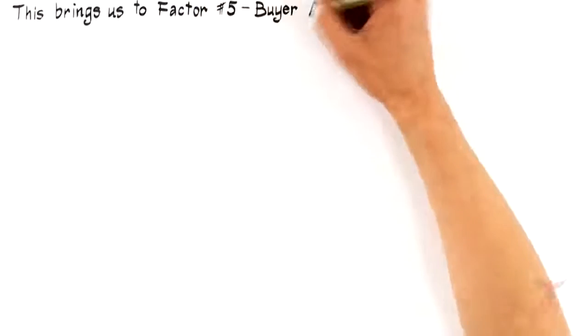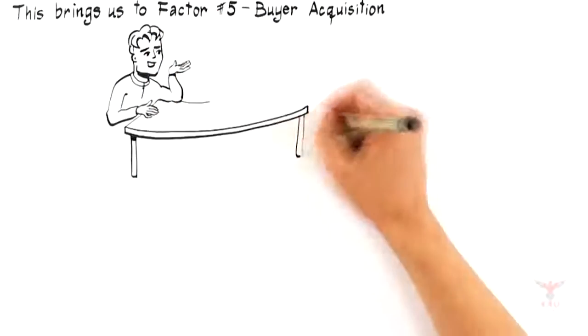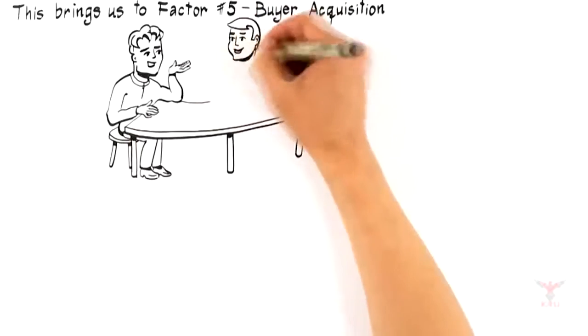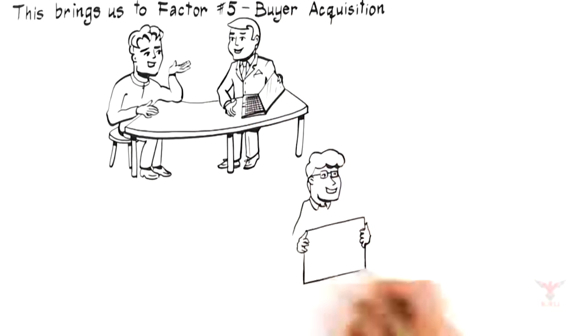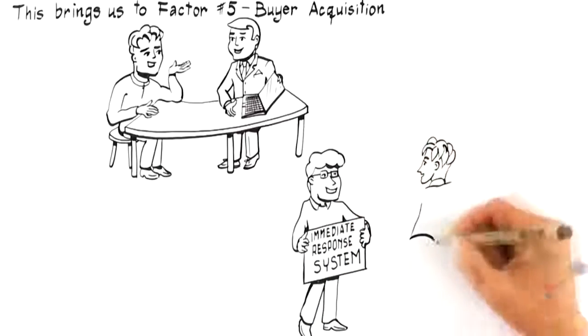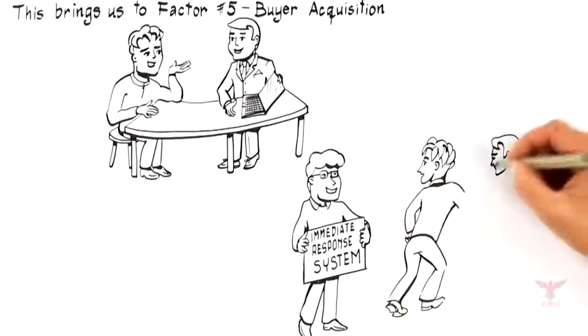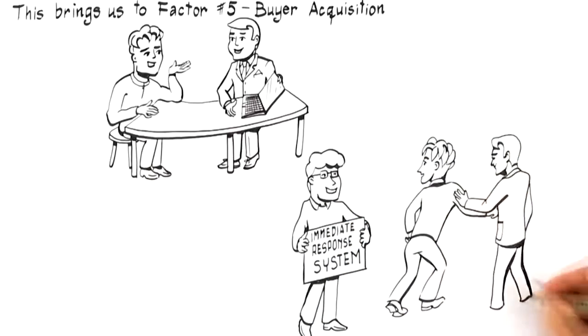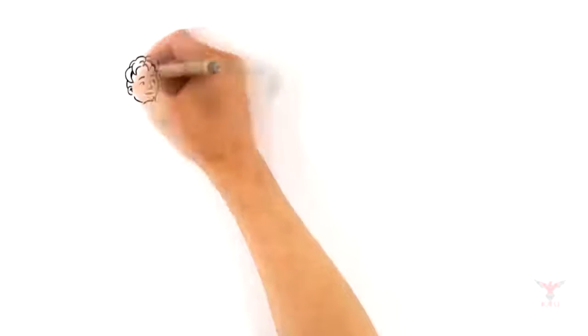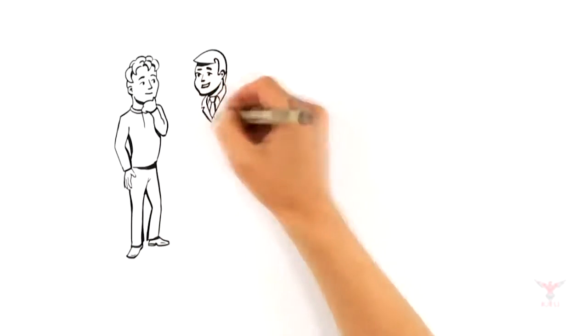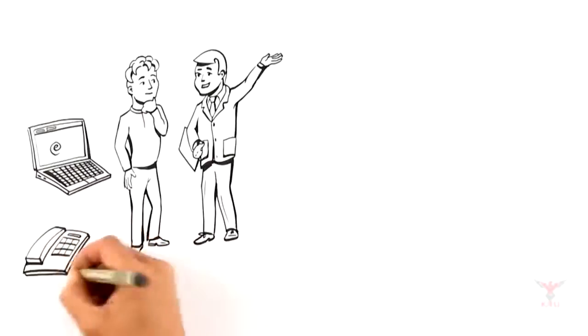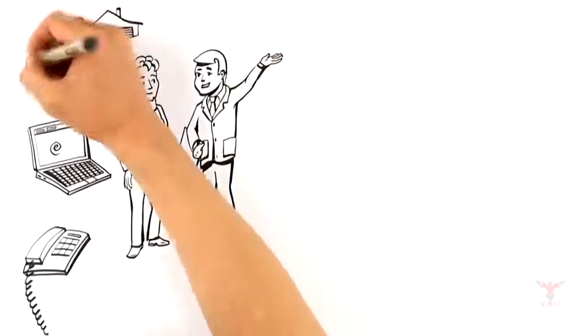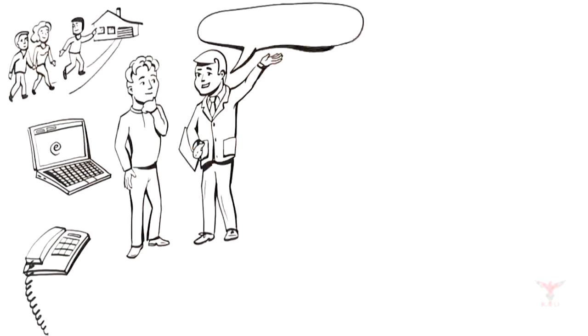This brings us to factor number five: buyer acquisition. With your home differentiated to attract top-dollar offers, a strong marketing budget in place to expose your home to targeted buyers, and an aggressive plan to motivate cooperating agents to bring you their best clients, hiring a professional who has developed an immediate response system is critical to acquiring a buyer for your home. Think of this like the circuit breaker in your house. Emails, calls, and showings are like electricity for the sale of your home. So without a system to process and qualify their flow, you risk shorting out a top-dollar offer.